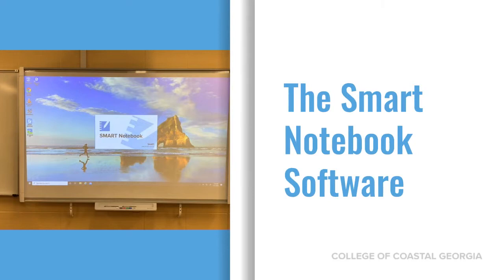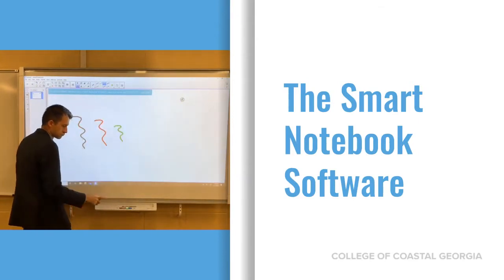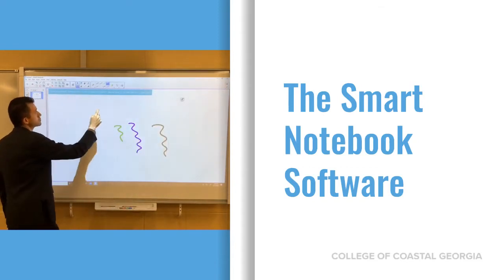To get started, open the smart notebook software. This software is going to give you a white canvas, just like a clean whiteboard. You can choose markers of different colors just by clicking the tray. And then you can just select elements, throw them, wow, it even keeps momentum.